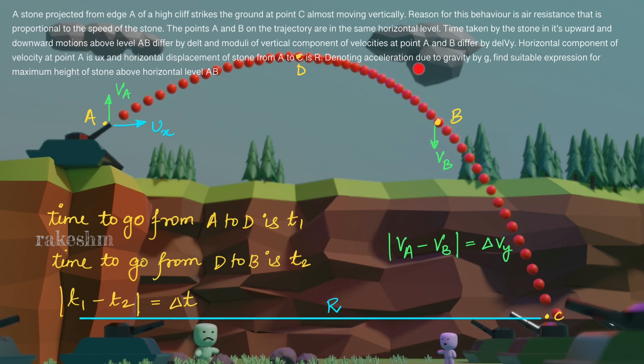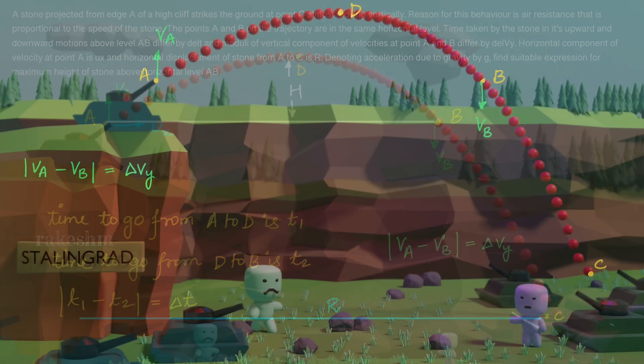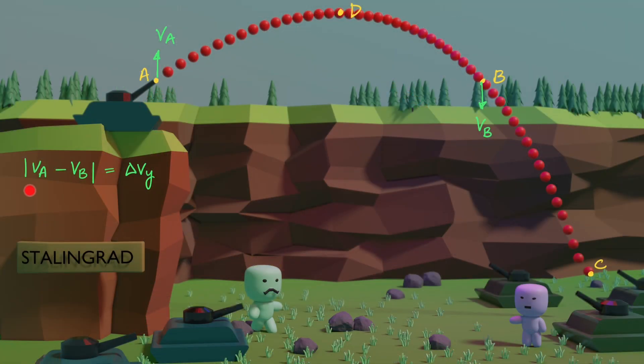Denoting acceleration due to gravity by G, find suitable expression for maximum height of the stone above horizontal level AB. So in terms of the given quantities we need to find what is this H, the maximum height of the stone above this level AB. So the first condition we had written: modulus of Va minus Vb is delta Vy.